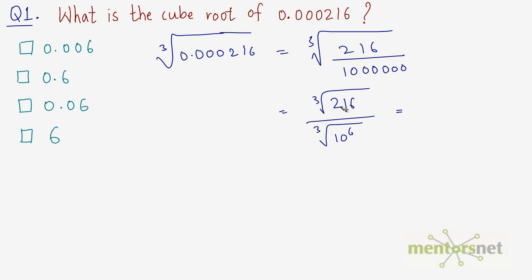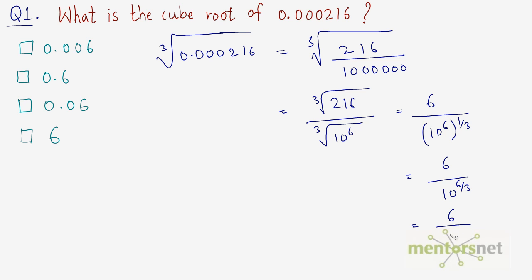The cube root of 216 is 6. If you don't know, you can calculate it by representing 216 as a product of its prime factors and taking the root of both sides. So this becomes 6 divided by the cube root of 10 to the power 6, which by the laws of indices is 10 to the power 6 over 3, equal to 10 squared, which is 100. So 6 divided by 100 equals 0.06.